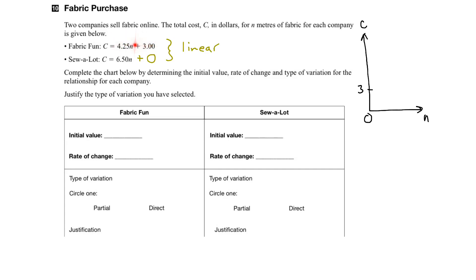So, given this equation here, we know that for FabricFun, the fixed cost is $3, or initial value, and that it increases by $4.25 per meter. So, we can write that as starting at $3 fixed cost and going up at $4.25 per meter.